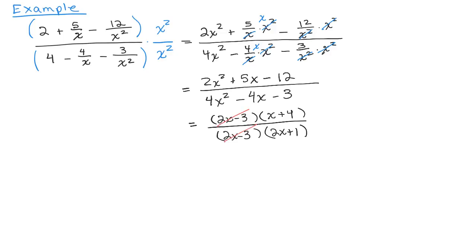So we do have a common factor. We need to cancel here. So our final answer is x plus 4 over 2x plus 1.